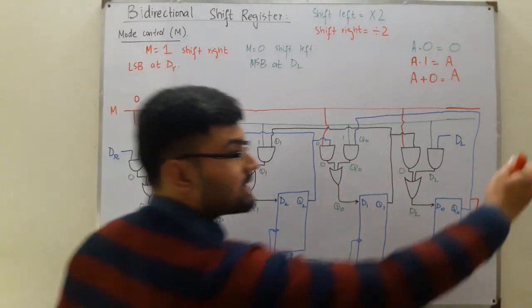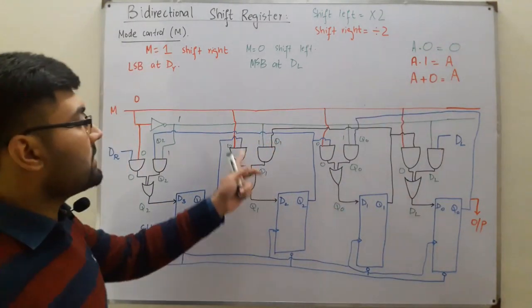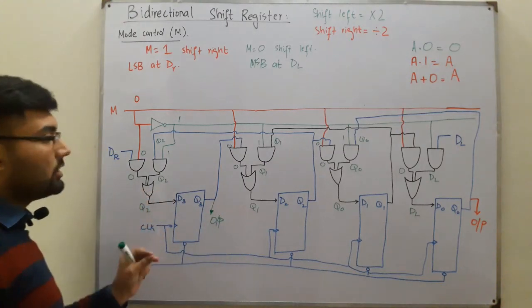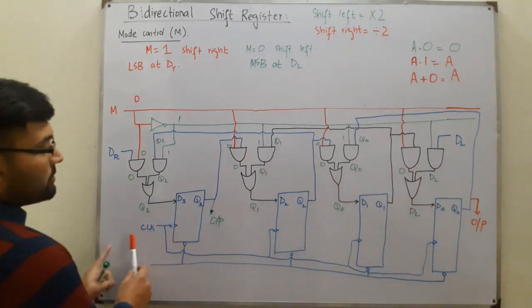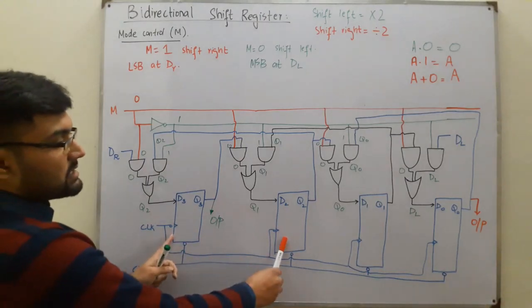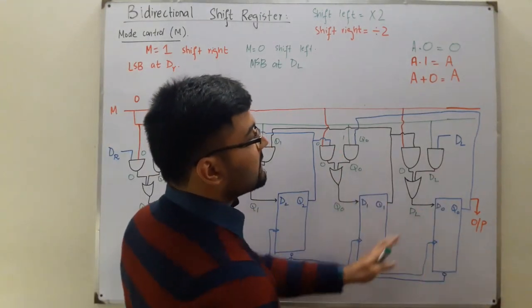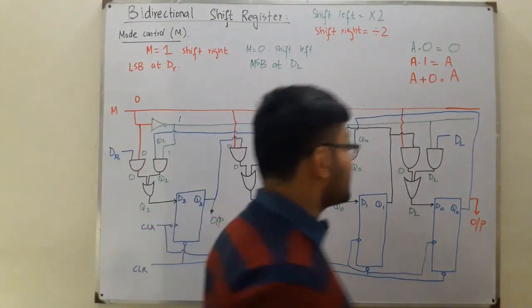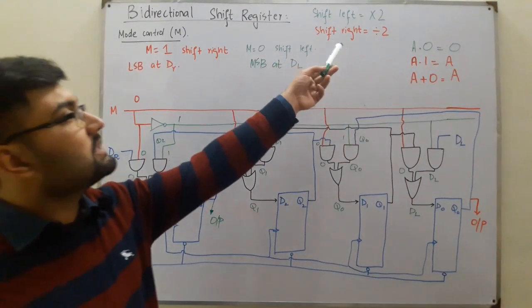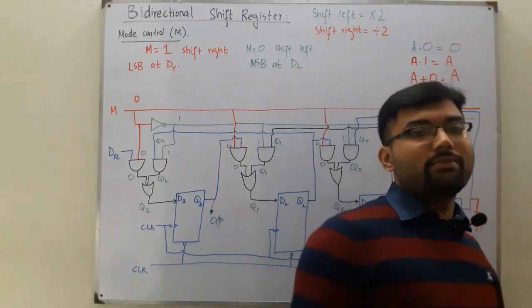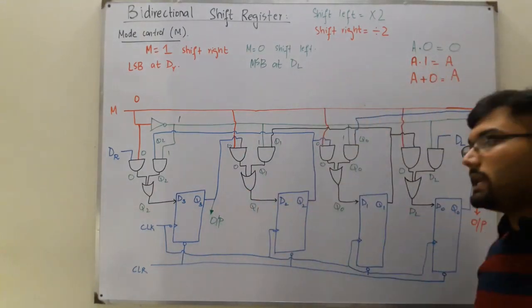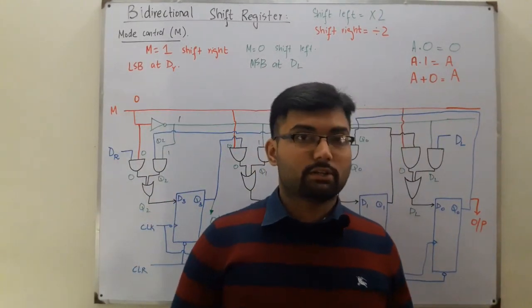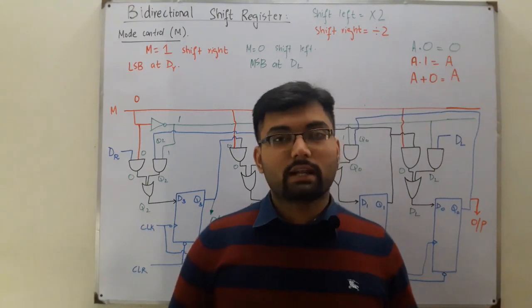You can add more flip-flops similarly — this combinational circuit appears between any two successive flip-flops. That's all about the bi-directional shift register. To summarize: shifting left multiplies your data by 2, and shifting right divides your data by 2. See you in the next lecture on the universal shift register. Take care of yourself and everyone around you. Goodbye.